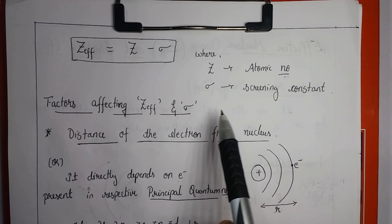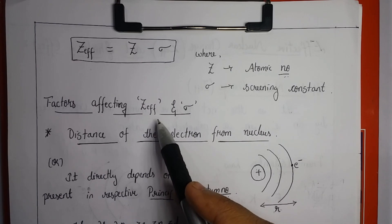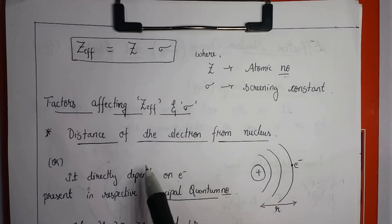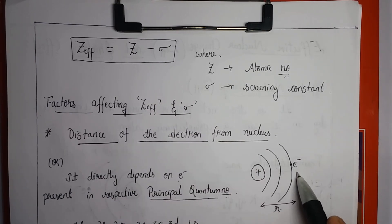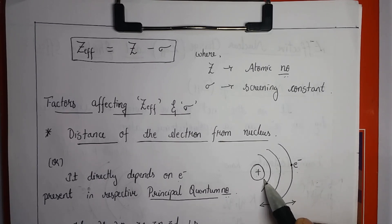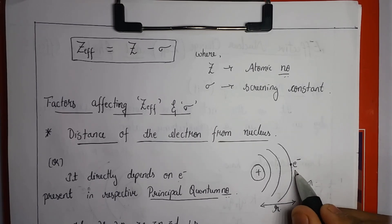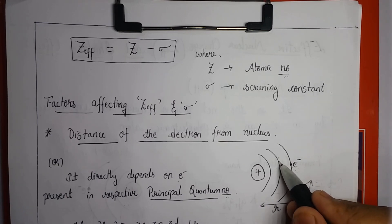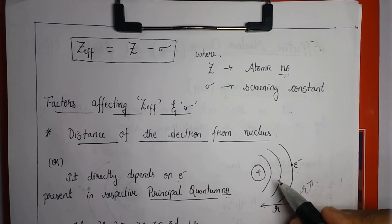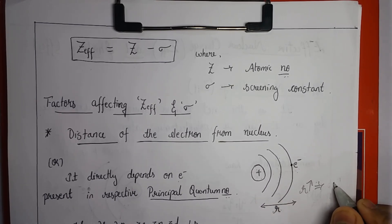Now let us discuss the factors that affect Z_effective and sigma. The first factor is the distance of the electron from the nucleus, represented by r. As r increases — that is, as the distance of the electron from the nucleus increases — the number of electrons in the inner lying orbitals increases, hence the shielding of these inner lying orbitals also increases, which means sigma increases.